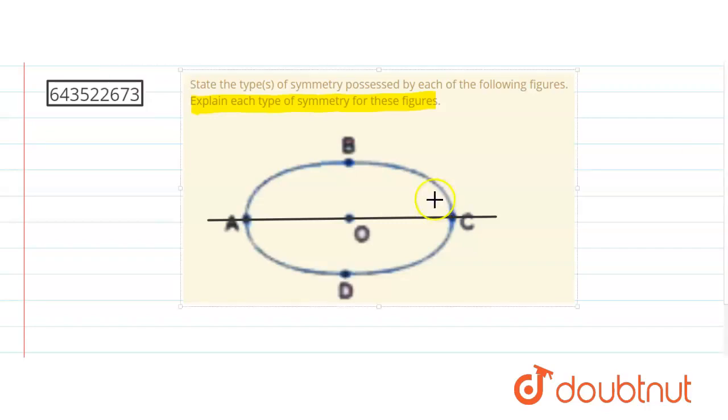okay and through the origin. See this also makes the two equal parts. So this is one, two, and if we just put them on each other so that will coincide on each other. So there are two lines of symmetries.